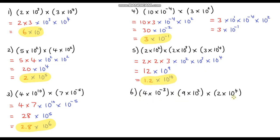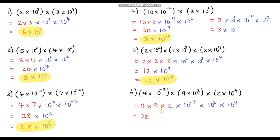Finally, question 6. Again quite a lot going on, but same process. Grouping the single-digit numbers: 4 times 9 is 36, and 36 times 2 is 72 — or equivalently 4 times 2 is 8 and 8 times 9 is 72, showing again that the order doesn't matter. Then adding the indices for the powers of 10: 2 plus 4 is 6, and 6 minus 3 is 3, so 10 to the power 3. We've got 72 times 10 to the power 3. Dividing by 10 gives 7.2, and multiplying the power by 10 gives 10 to the power 4. Final answer: 7.2 times 10 to the power 4.